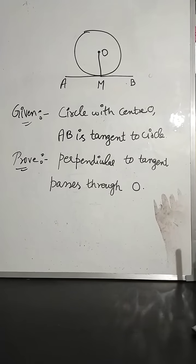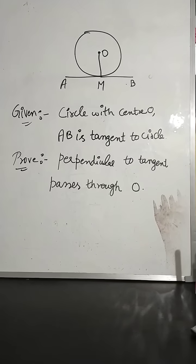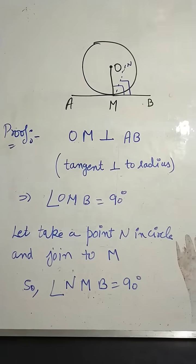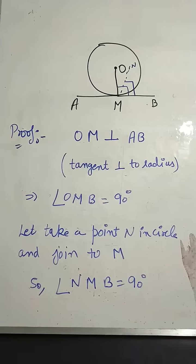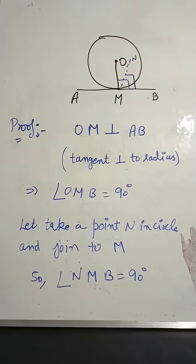We have to prove perpendicular which is OM to the tangent AB passes through O. Now in proof, OM perpendicular to AB because tangent perpendicular to radius according to theorem 10.1. So angle OMB is 90 degrees.